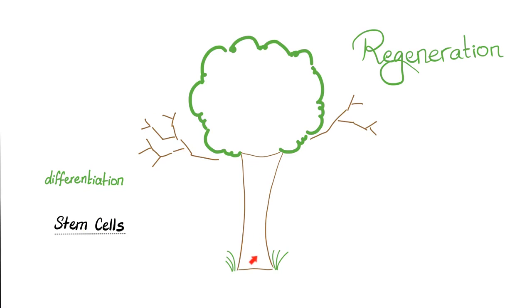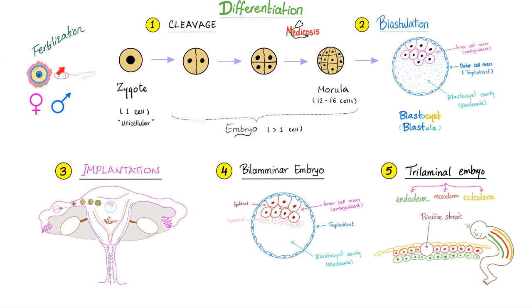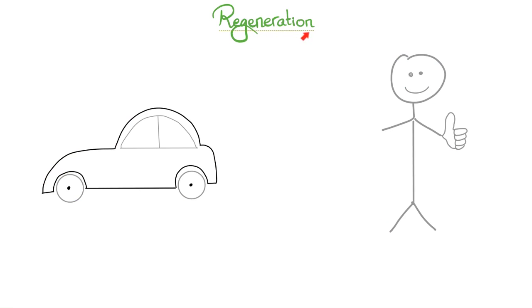This is your stem cell, which can differentiate and give you many different cells. Like a tree, your body can regenerate. We have talked about fertilization, cleavage, blastulation, implantation, and bilaminar and trilaminar in previous videos — all of these are examples of differentiation. Now it's time to talk about regeneration.